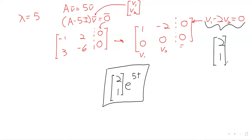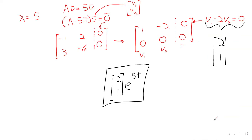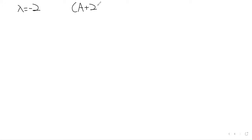This gives us the solution (2, 1)·e^(5t). We then repeat this process with the other eigenvalue, λ = -2. It does get repetitive, but for λ = -2 we want (A + 2I)v = 0, since A minus negative 2 gives A plus 2.